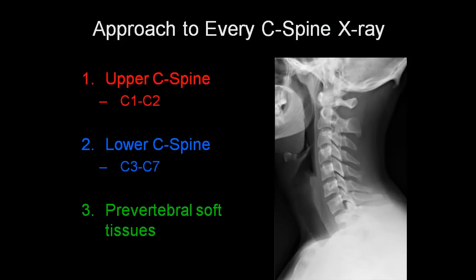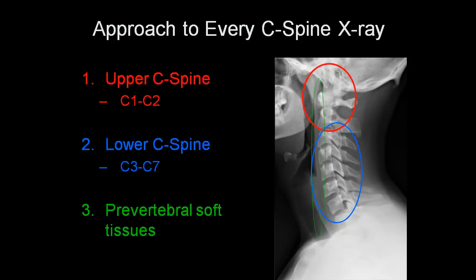In terms of an approach to every cervical spine x-ray, the upper cervical spine — the C1-C2 region — should be looked at separately. Next, the lower C-spine — C3 to C7 — should be looked at separately. Finally, you should make special attention to the prevertebral soft tissues.